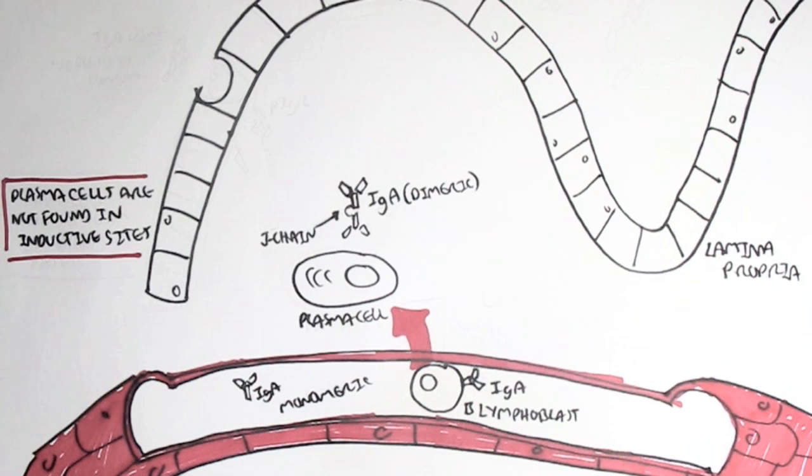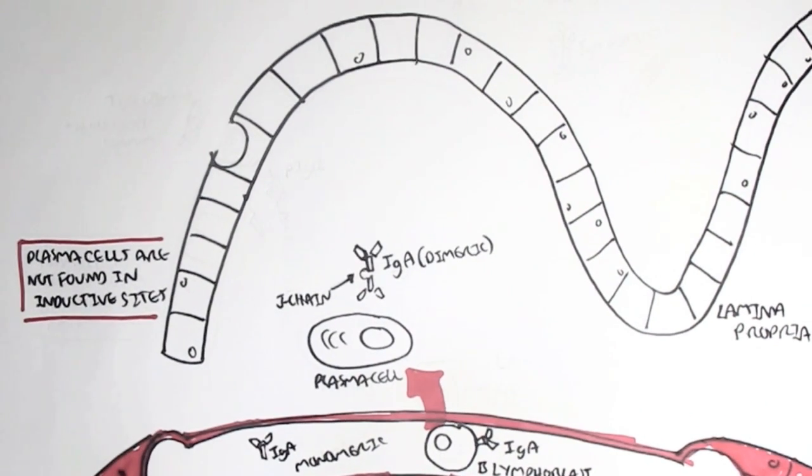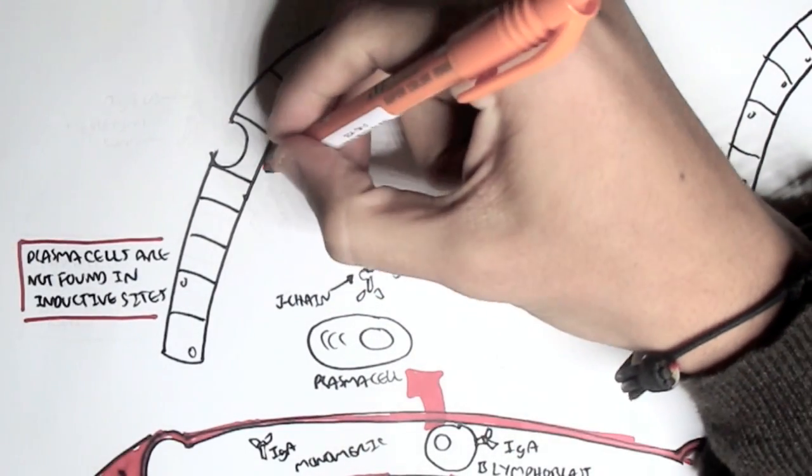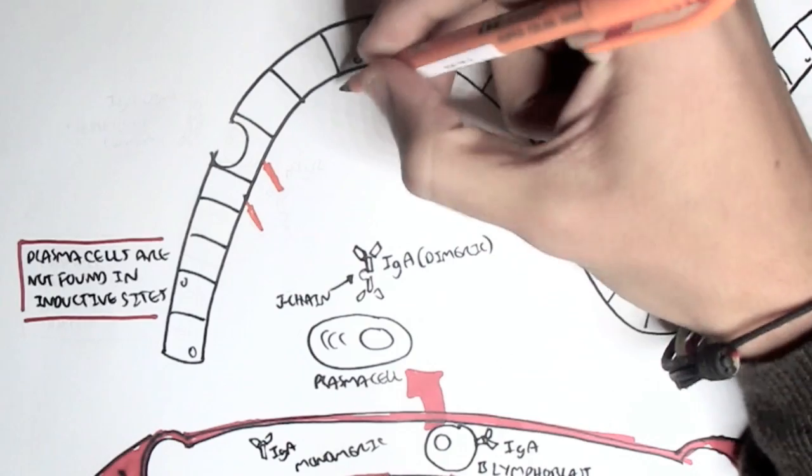Now that the plasma cell has secreted these IgA antibodies, what happens next? The dimeric IgA antibody can move from the lamina propria into the lumen, where it can help prevent antigens from entering our body, entering the mucosal surface for example.